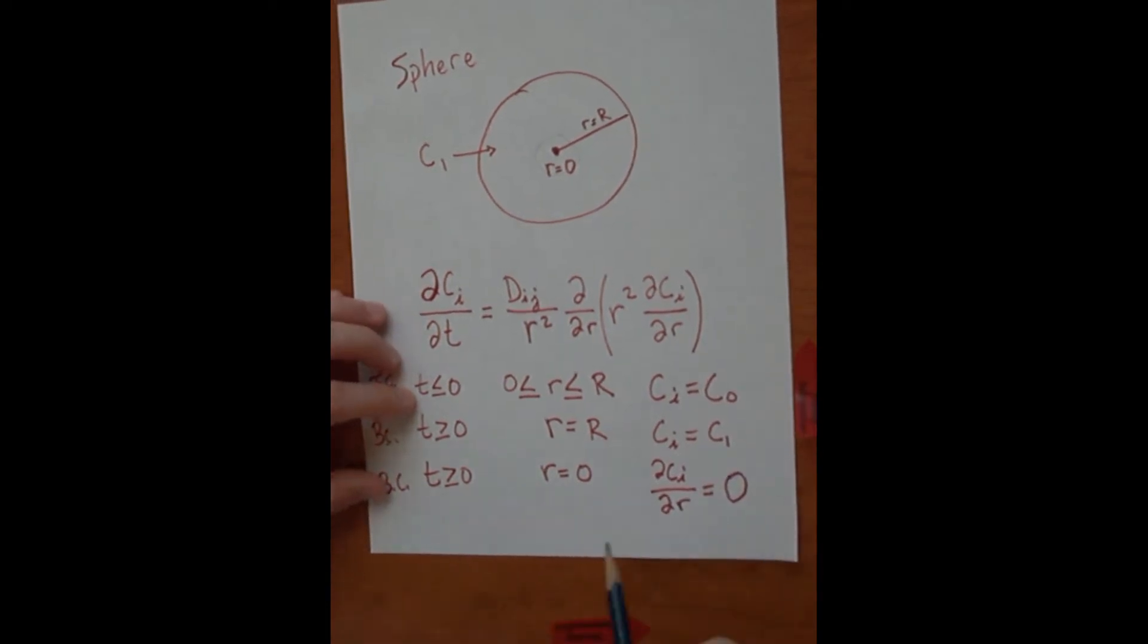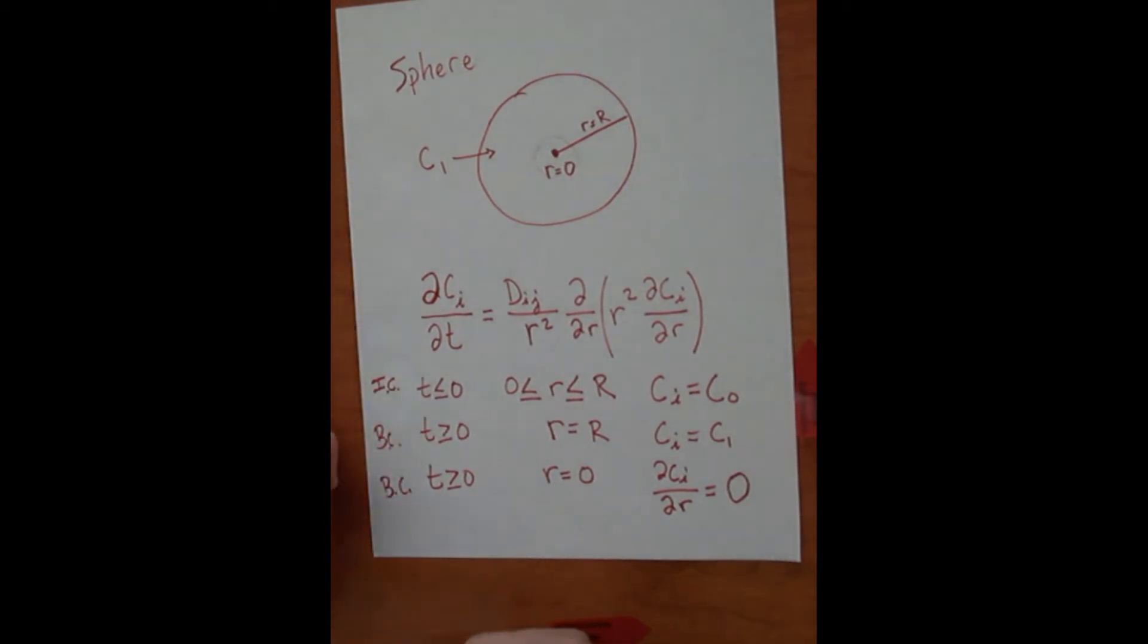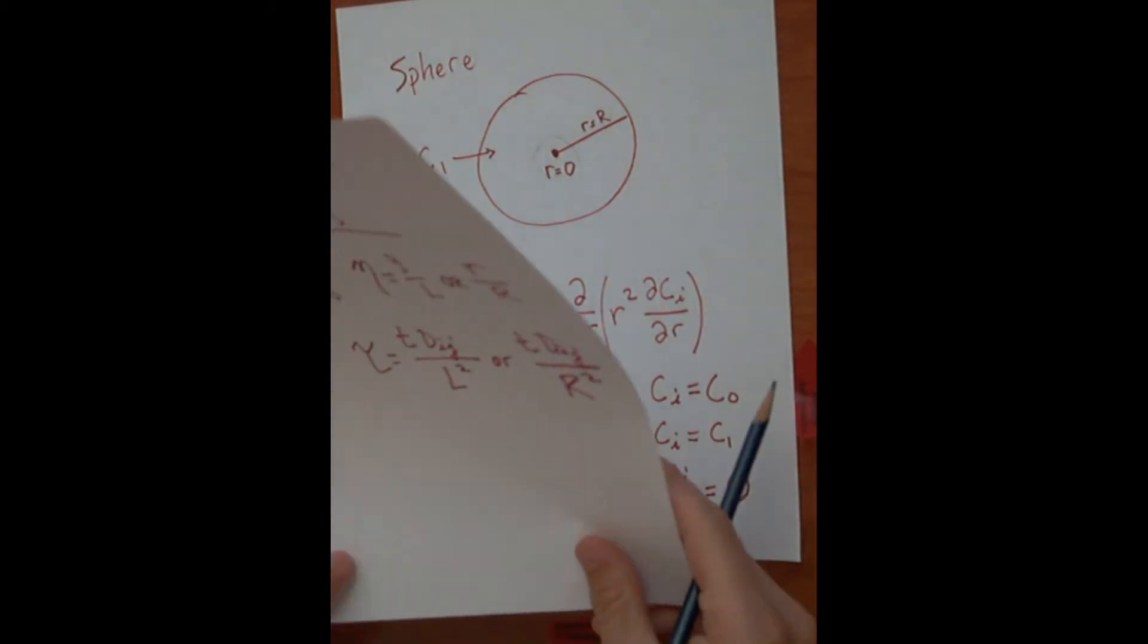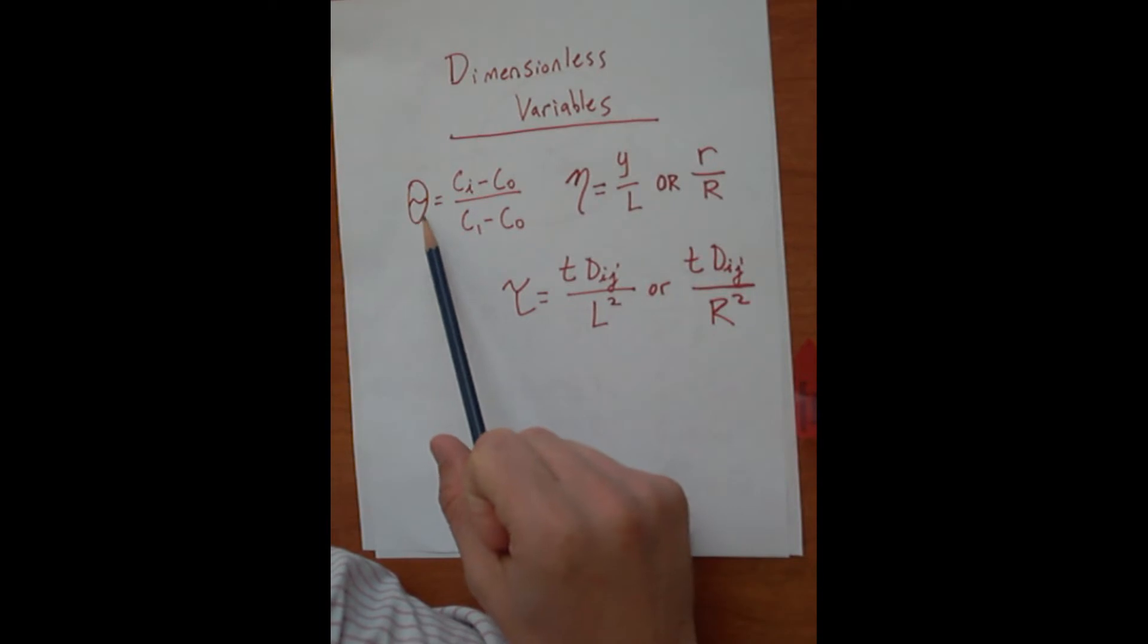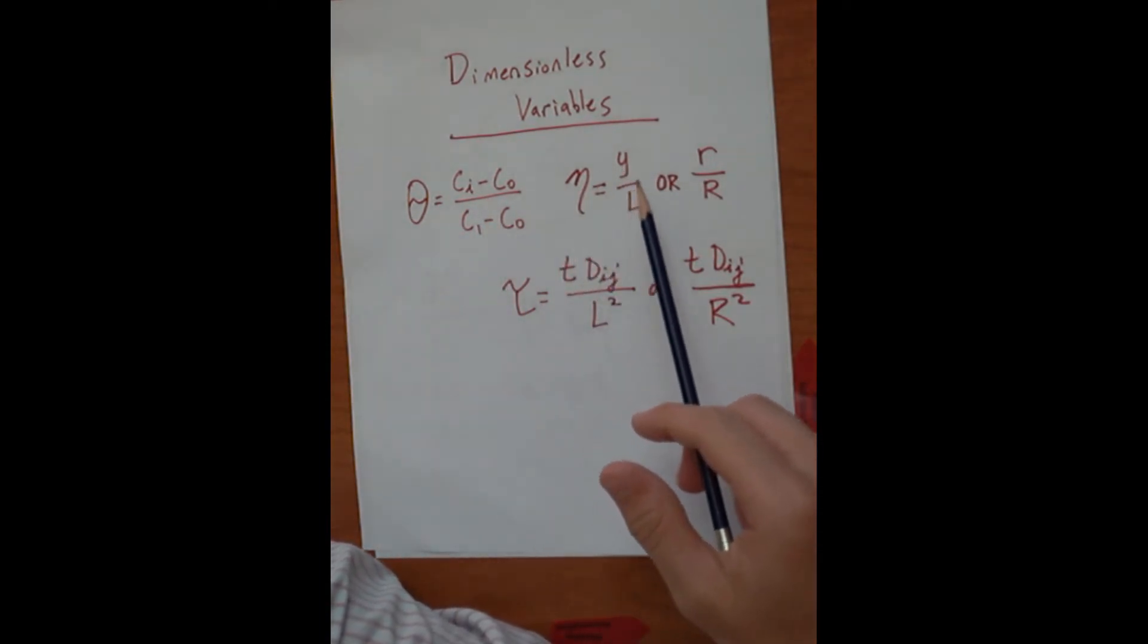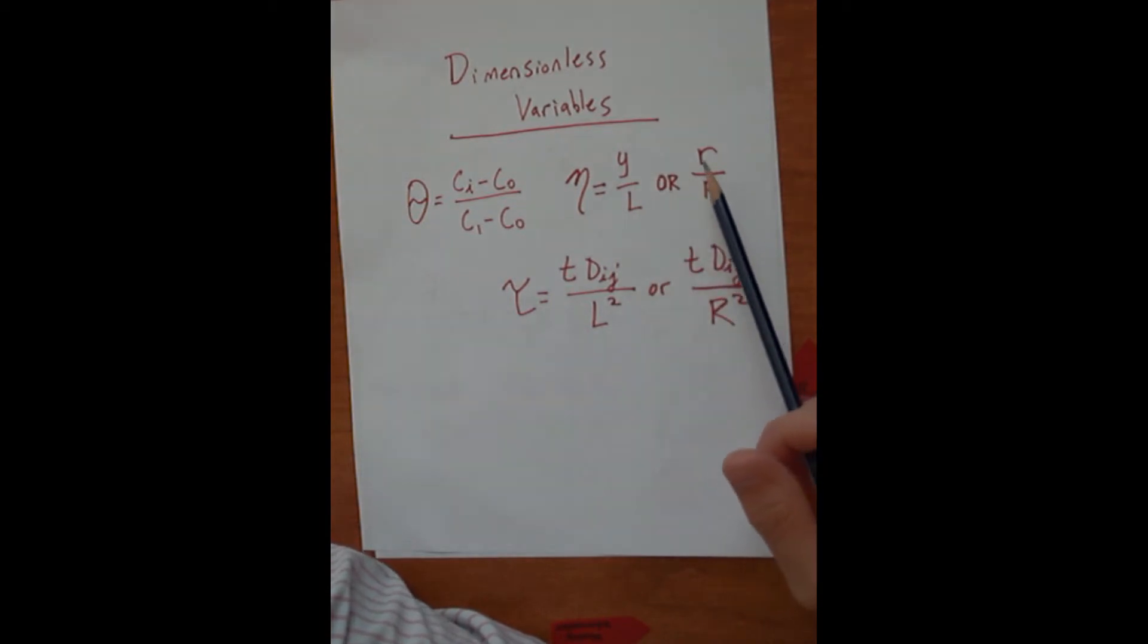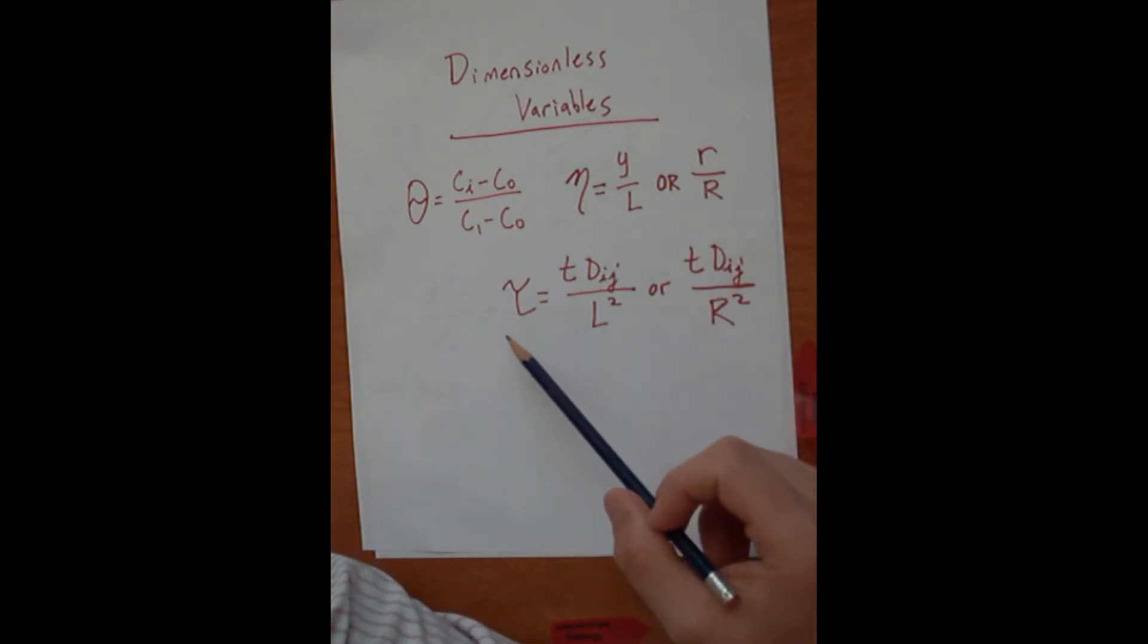So very similar to the last way we set up, the only difference is the geometry's changed. Because of the change in the geometry, we're going to have slightly different dimensionless variables. The dimensionless concentration of theta remains the same, but eta changes from y over L for rectangular coordinates to little r over big R for your sphere, and your tau dimensionless time will change to T times the diffusion coefficient divided by capital R squared, your radius.